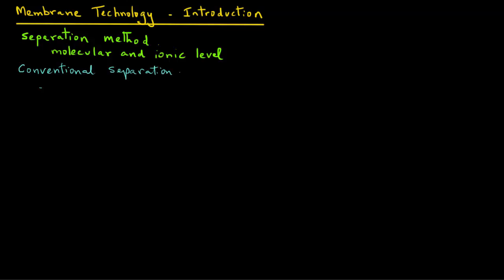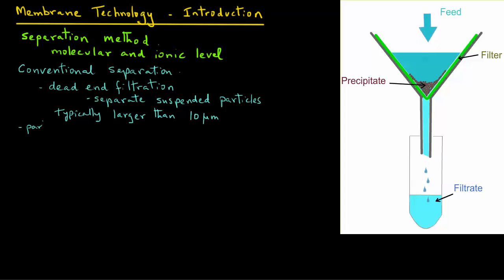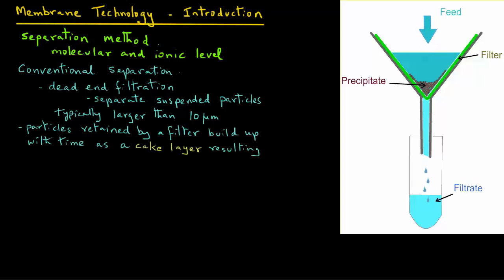The conventional separation systems, which are also called dead-end filtration, where we may use filtration to separate suspended particles that are typically larger than 10 micrometers. A very common procedure will be where particles are retained by a filter and those particles start to build up with time as what is called a cake layer that results in increased resistance to filtration.